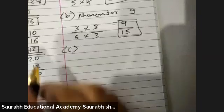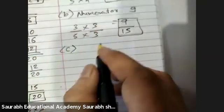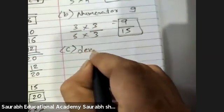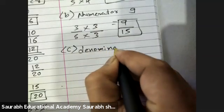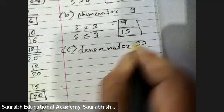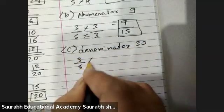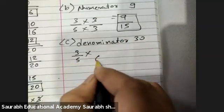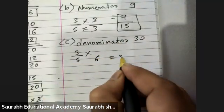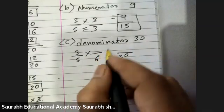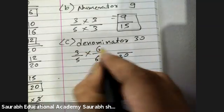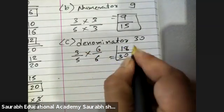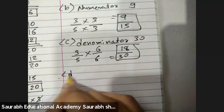Then denominator 30. Three upon five. For getting 30, five sixes are 30, right? So here three into six is 18.